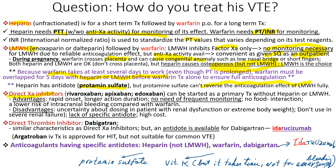Direct factor 10a inhibitors — rivaroxaban, apixaban, edoxaban — can start as primary treatment without heparin or low molecular weight heparin because they work right away and last a long time. There is no need for frequent monitoring, no food interaction, and they have a low risk of intracranial bleeding compared with warfarin therapy. Disadvantages include inability to use in patients with renal impairment or very heavy weight, and they have no specific antidotes.